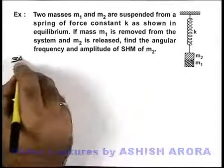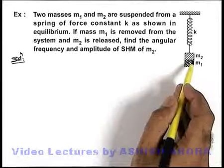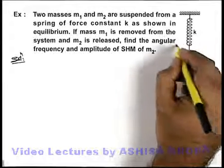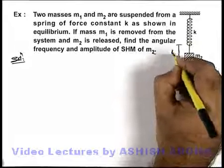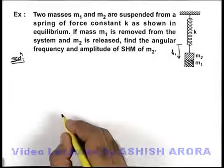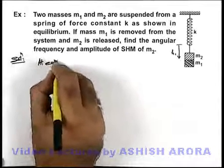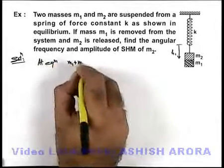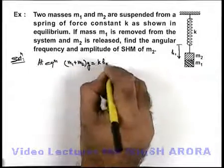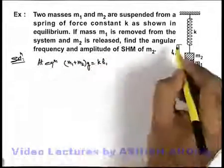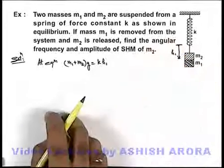If the two masses are hanging in equilibrium, the spring must be extended from its natural length by a distance h1. At equilibrium, (m1 + m2)g, the total weight, is balanced by the force of spring kh1, where h1 is the extension from its natural length due to the weight of the two blocks.